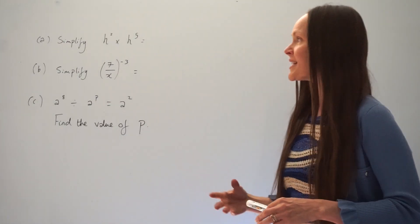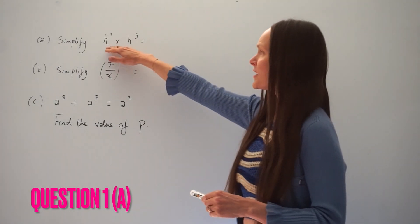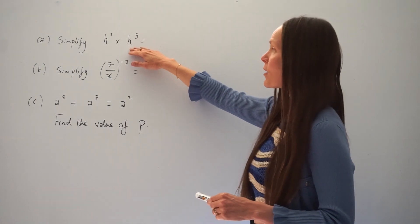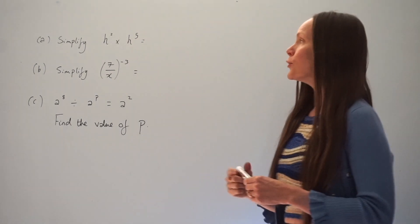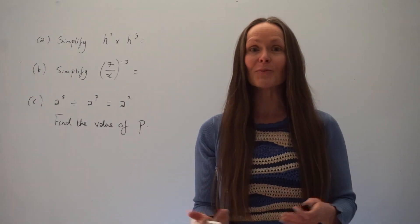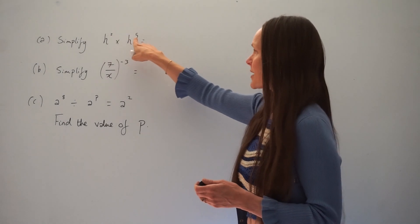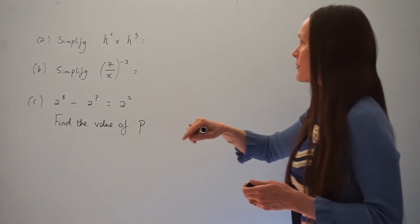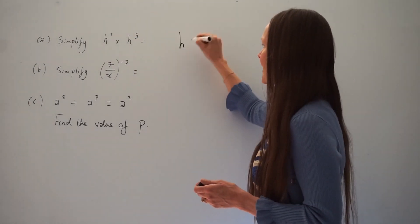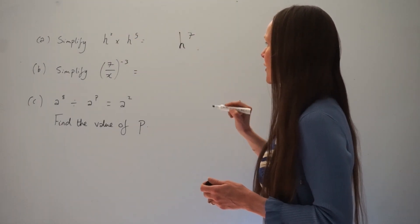In part A we have to simplify h squared multiplied by h to the power of 5. Remember, whenever you're multiplying, you must add the powers together. So 2 plus 5 is 7, so the answer to part A is h to the power of 7.